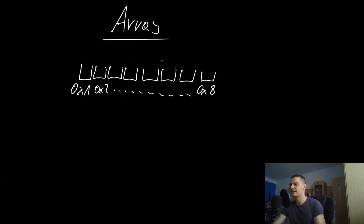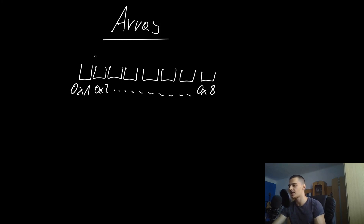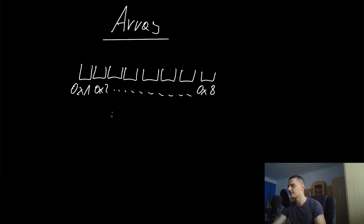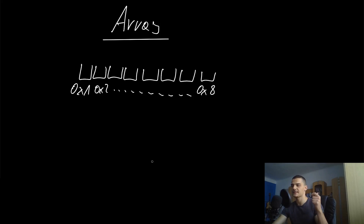Similarly, I can delete or insert an element in constant time — I find the position in constant time, then perform the operation. The only thing that cannot be done in constant time is finding an element, because I have to go through the whole list. In the worst case I find it at the last index or not at all, so that's done in linear time, big O of n. Sorting is done in average case O(n log n). But the essential operations — access, insert, and delete — are done in constant time in arrays.